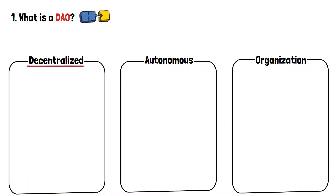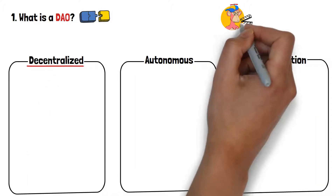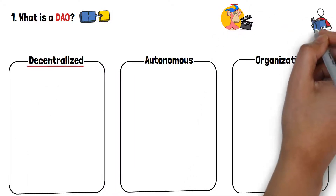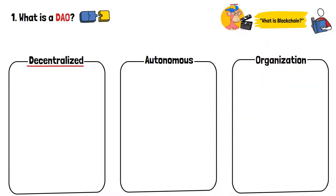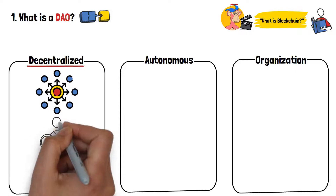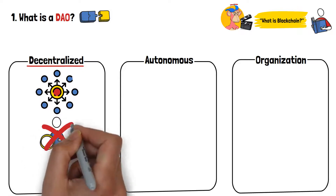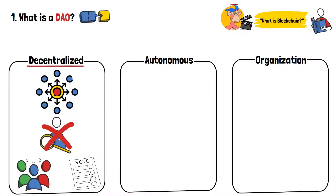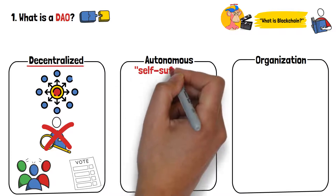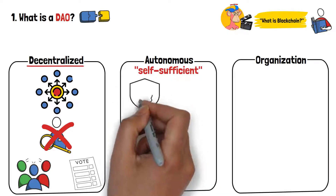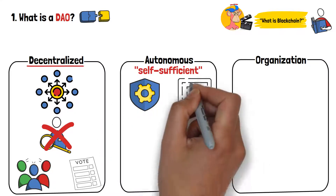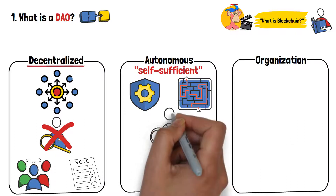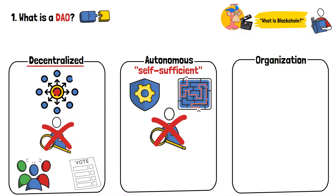Decentralization is something I've covered in quite a few videos already. If you're interested in studying the concept in depth, you can check out our video on blockchains. To put it shortly, decentralization refers to something lacking a single, central authority. Imagine a company without a CEO, where all of the employees are equally responsible for making decisions.